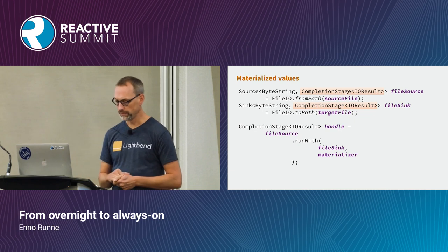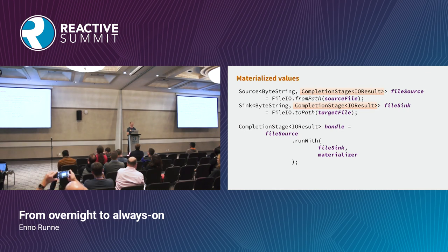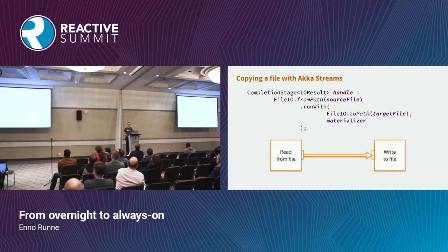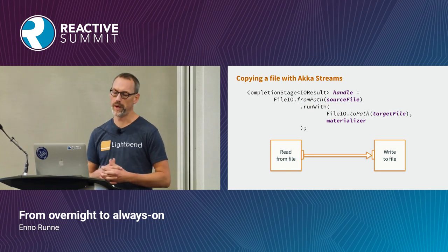So we can use the runWith method, which is a little bit different, and then we get the correct IO result. There are other ways to do this, but this is the simplest one. This materialization of the blueprint is one of the parts most puzzling for many people when they start with Akka Streams. So don't be surprised when you try it. When we have all this together, it's not much code. We copy a file - it might be one of the most expensive ways to copy a file with the help of a JVM.